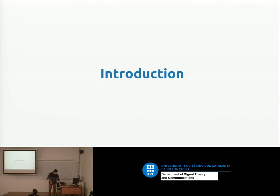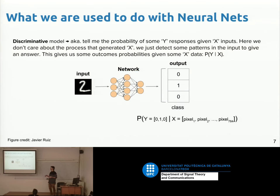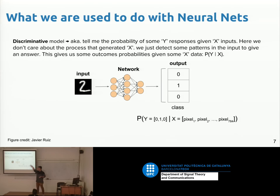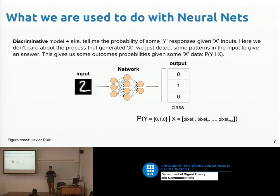I'll assume zero knowledge on generative models and build bottom up. Discriminative models — what you've seen so far — take an input image, for example a handwritten digit, and output a probability over categories saying that digit is number two. We are asking the network to give us some probability of an outcome given some input. We don't care what generated the image.